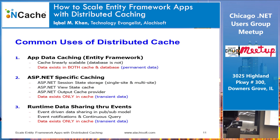There are three ways as a developer you can benefit from a distributed cache. Today we're going to focus mainly on the first one, which is application data caching — caching data that exists in your database, like customers, accounts, and your real business data. The key thing to keep in mind is that data exists in two places: one in the cache and one in the database. When data exists in two places, the biggest concern is data integrity — you want to make sure the cache never has an older version of the data.